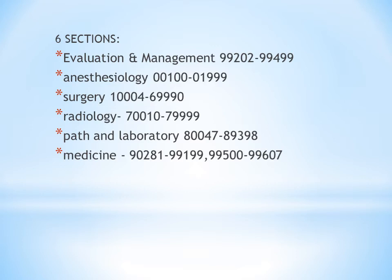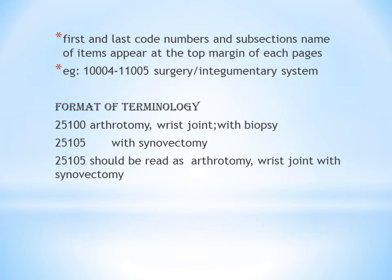Radiology covers different radiological services performed, with a code range of 70000–79999. Pathology and Laboratory covers different laboratory tests and services, with codes from 80047 to 89398. The last subsection, Medicine, has codes from 90281 to 99199 and 99500 to 99607.